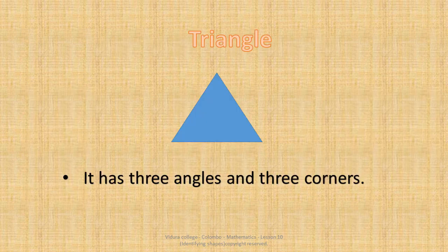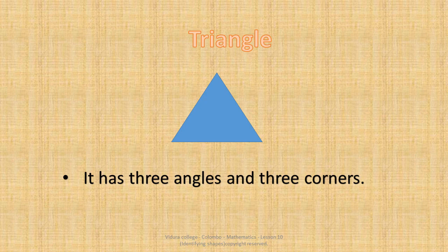What is this shape? It's a triangle. It has three angles and three corners.